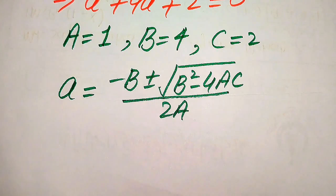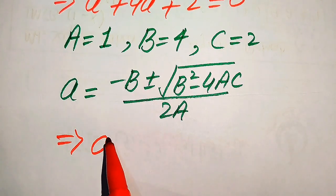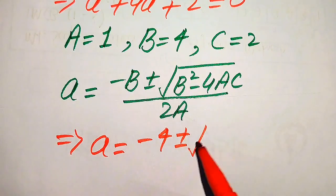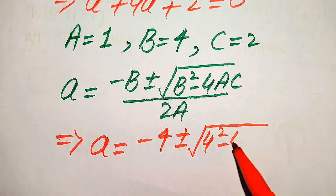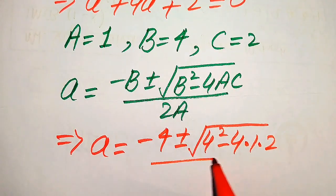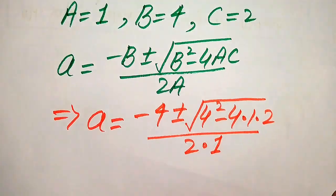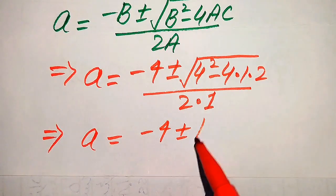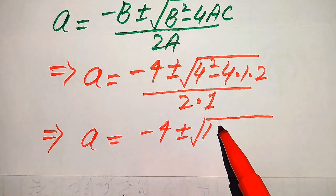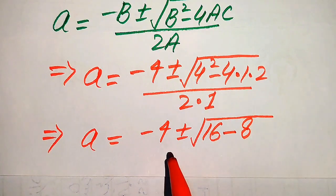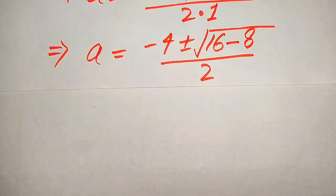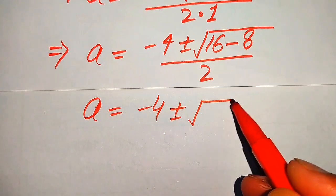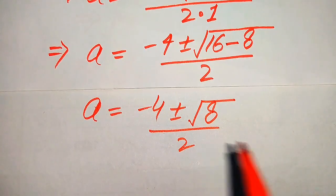Now we substitute the values of a, b, and c: a = (−4 ± √(4² − 4·1·2)) / (2·1). In the next step, 4² = 16 and 4 times 2 = 8, so we have a = (−4 ± √(16 − 8)) / 2, which gives a = (−4 ± √8) / 2.